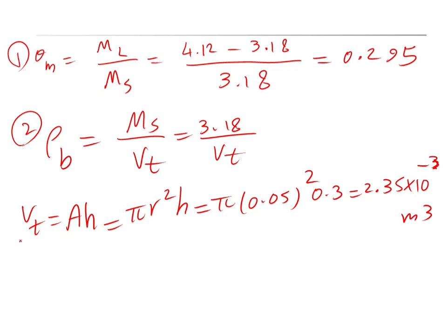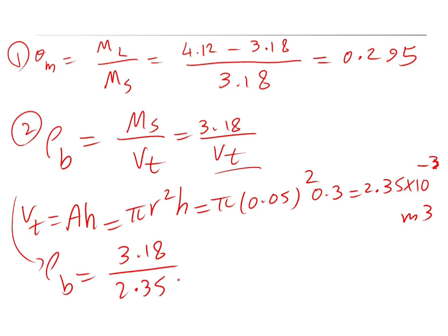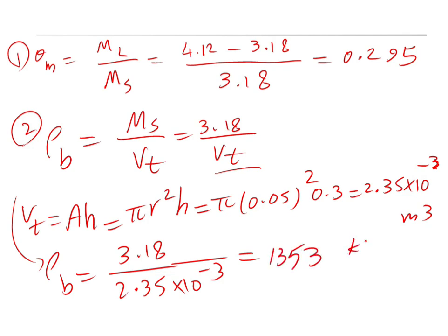Substituting into the bulk density equation: rho b equals 3.18 divided by 2.35 times 10 to the minus 3, which equals 1,353 kg per cubic meter. That is the bulk density.